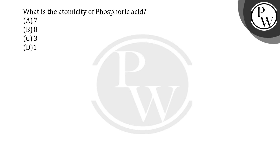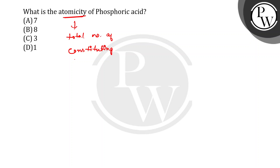Hello students, let's see the question. The question is: what is the atomicity of phosphoric acid? Atomicity means the total number of constituting atoms.